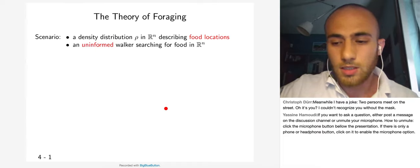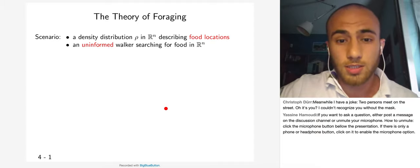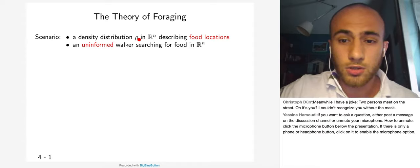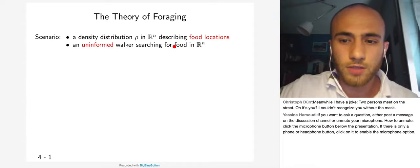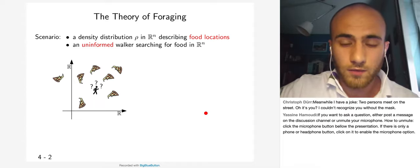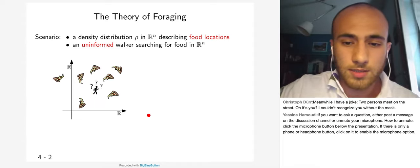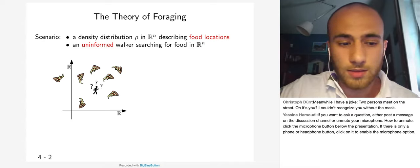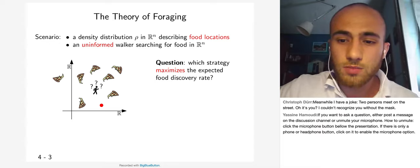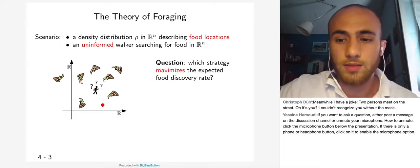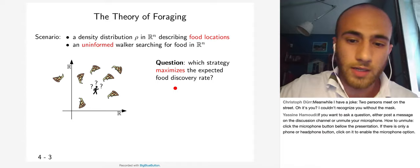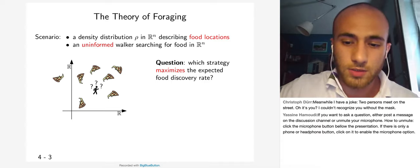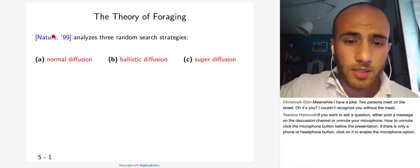Lévy walks are studied in the theory of foraging. The scenario is the following: there is a density distribution in R^n describing food locations, and there is an uninformed walker searching for food who doesn't know the locations — for example, a man looking for slices of pizza without knowing where they are. The question is: which strategy maximizes the expected food discovery rate? This is simply the number of food locations discovered divided by the time needed to discover them.